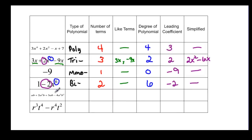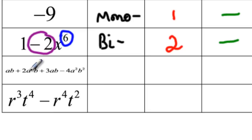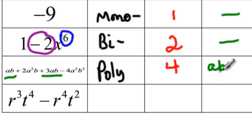Now, you may not be able to read this very well, but we have four terms. So this is just a polynomial. It is ab plus 2a²b plus 3ab minus 4a²b². If I look at that very closely, I have an ab term right here and I have another ab term right here. So I have ab and I also have 3ab.